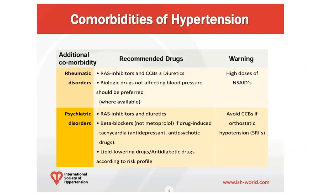For heart failure, use ACE inhibitors and diuretics. For peripheral vascular disease, ACE inhibitors and calcium channel blockers. For stroke, diuretics and calcium channel blockers. For rheumatic disorders, renin-angiotensin inhibitors, CCBs, and diuretics are appropriate. For psychiatric disorders, avoid calcium channel blockers due to orthostatic hypotension with SSRIs; diuretics and ACE inhibitors are better choices.